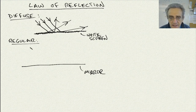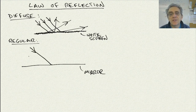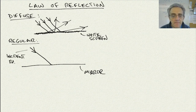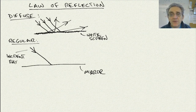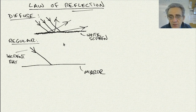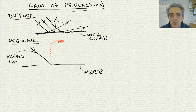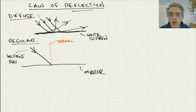When we have incoming rays, there's a name for this: the incident ray. In order to understand which direction the reflected ray goes — after all, this is the law of reflection — I'm going to draw what's called a normal. That dotted red line is perpendicular to the mirror. In mathematics, normal means perpendicular.